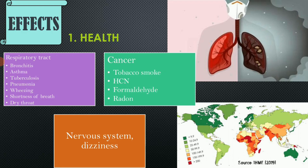Air pollution can also lead to malfunction of the nervous system, mental impairment, and dizziness — mainly associated with carbon monoxide poisoning. If lead is present in the toxic air we are breathing, it is known to cause damage to the nervous system, reproductive system, and kidneys. Generally, the three major effects are on the respiratory tract, causing cancer and affecting the nervous system.